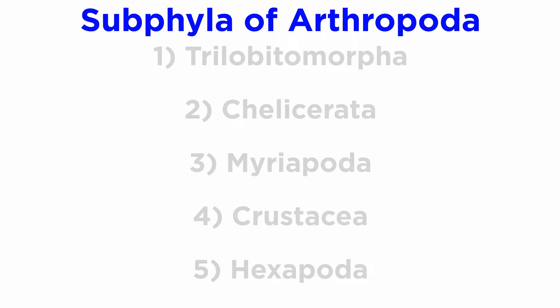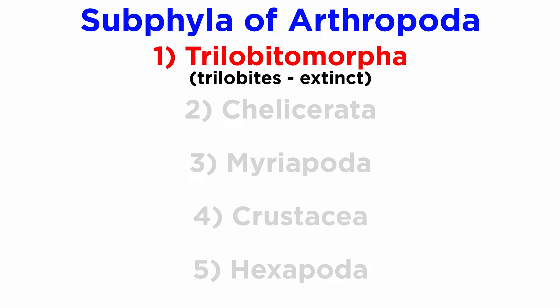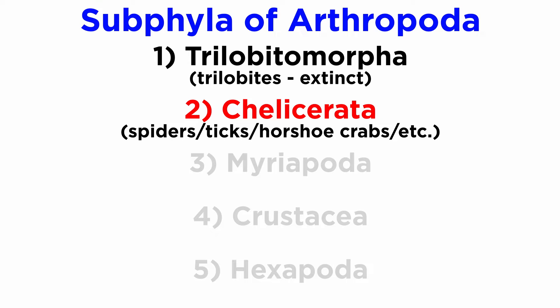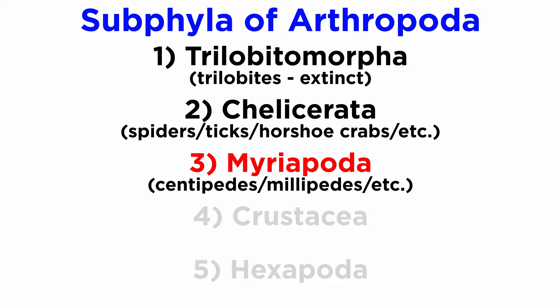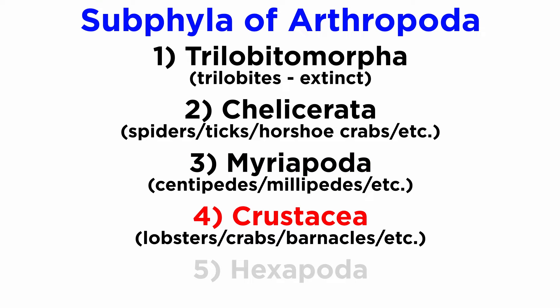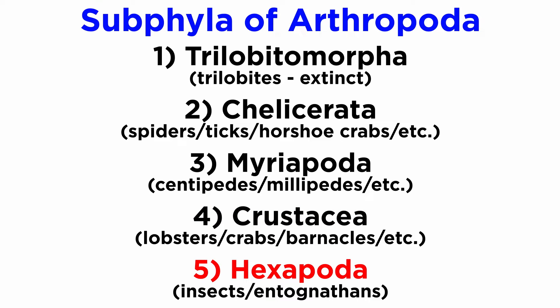Traditionally, the five arthropod subphyla were Trilobitomorpha, which is the only entirely extinct arthropod subphylum — the trilobites. Chelicerata, which contains the spiders, ticks, horseshoe crabs, and their relatives. Myriapoda, which includes the centipedes, millipedes, and their relatives. Crustacea, which includes lobsters, crabs, barnacles, and many others. And finally, Hexapoda, which includes the insects and entognathans.